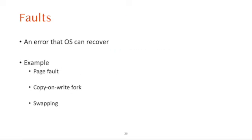Among traps, interrupts, and exceptions, there is a special exception called a fault. Faults are exceptions that an OS can recover from and continue application execution. The key example of this is a page fault. We looked at two mechanisms that modern operating systems use the page fault handler to implement: copy-on-write fork, and swapping.